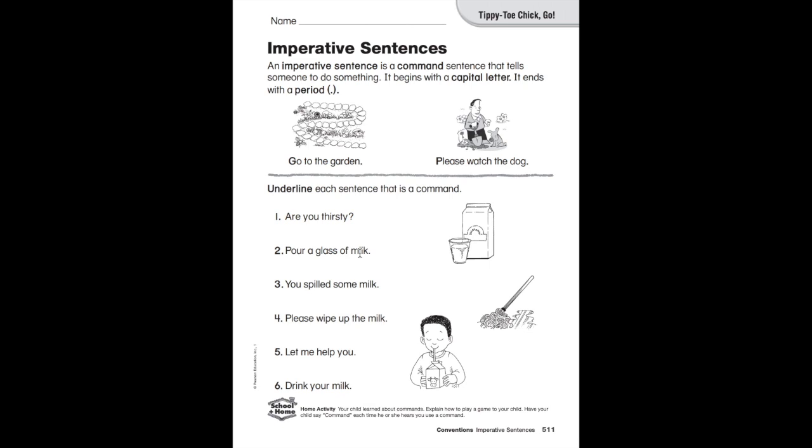Number three: 'You spilled some milk.' Well, that does end in a period, but it's not telling you to do something. It's simply stating that you have already done something. That is not an imperative sentence. We are not underlining number three. Number four: 'Please wipe up the milk.' Aha, period at the end and it's telling you to do something. That is an imperative sentence.